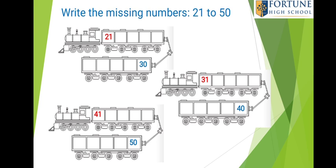Now children, will you help me to write the missing numbers in the train? So let us start. The first number is given: 21. What comes after 21? Yes, 22, 23, 24, 25, 26, 27, 28, 29, 30.